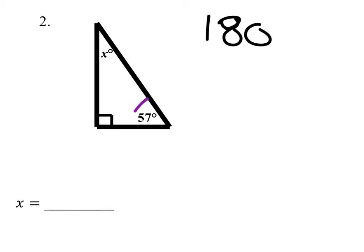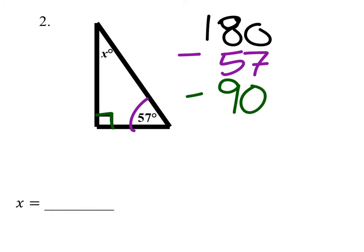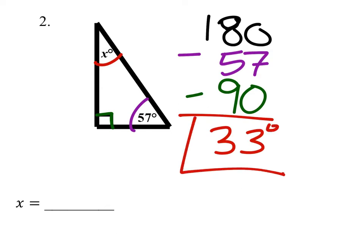Once again, the three angles of this triangle — or any triangle — should add up to 180. So if we get rid of this 57 degrees, we take it out. But then we've got this right angle. It didn't say it was 90 degrees in numbers, but the box shows that it is 90 degrees. So we just take that out, and that gives us this X angle: 33 degrees.